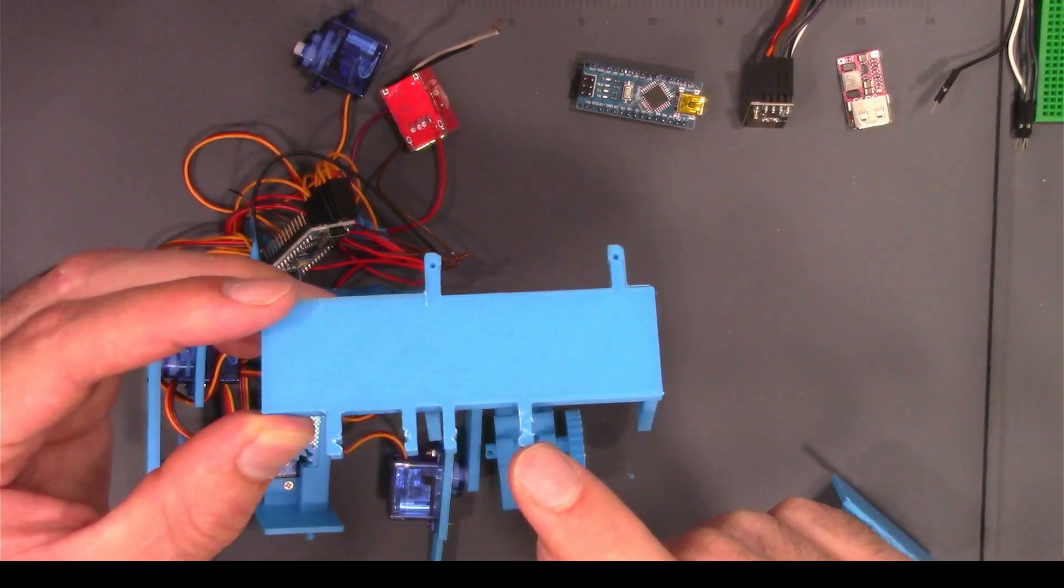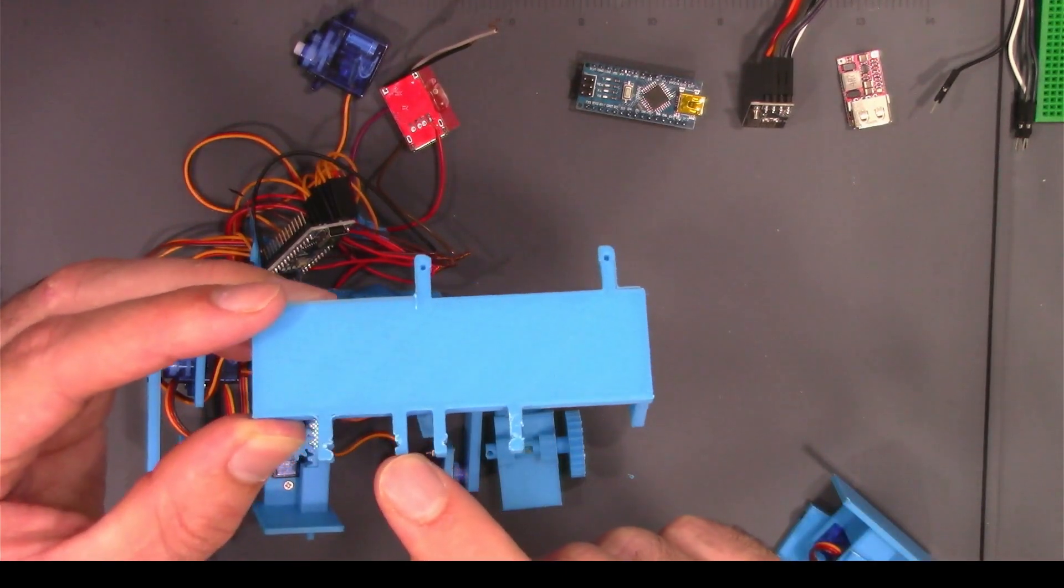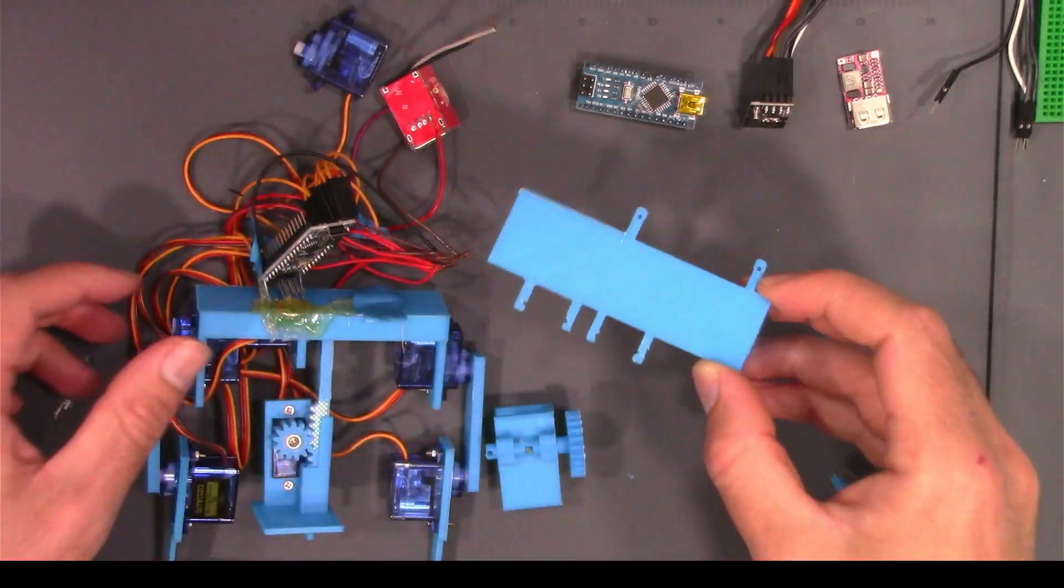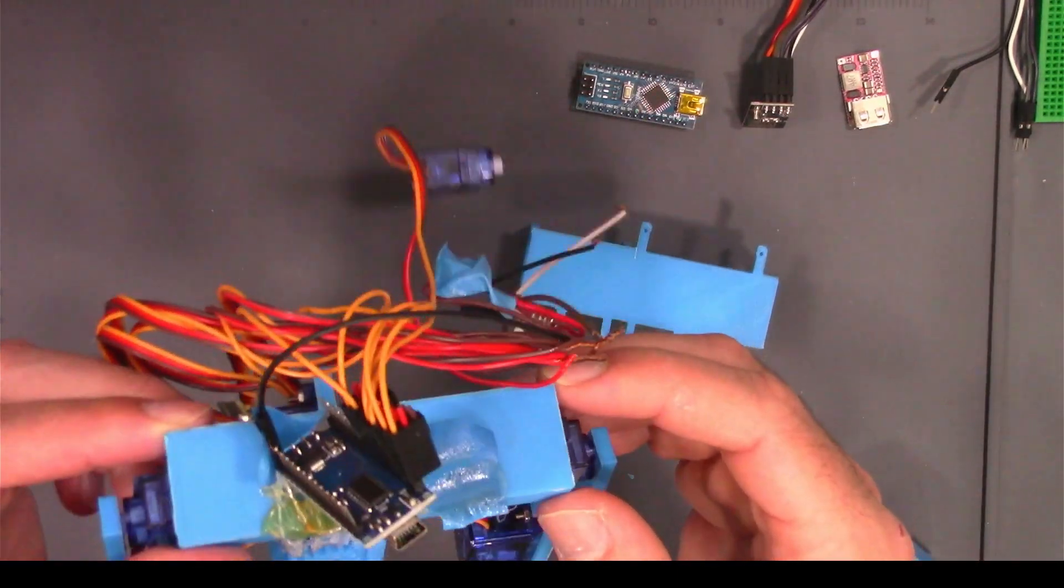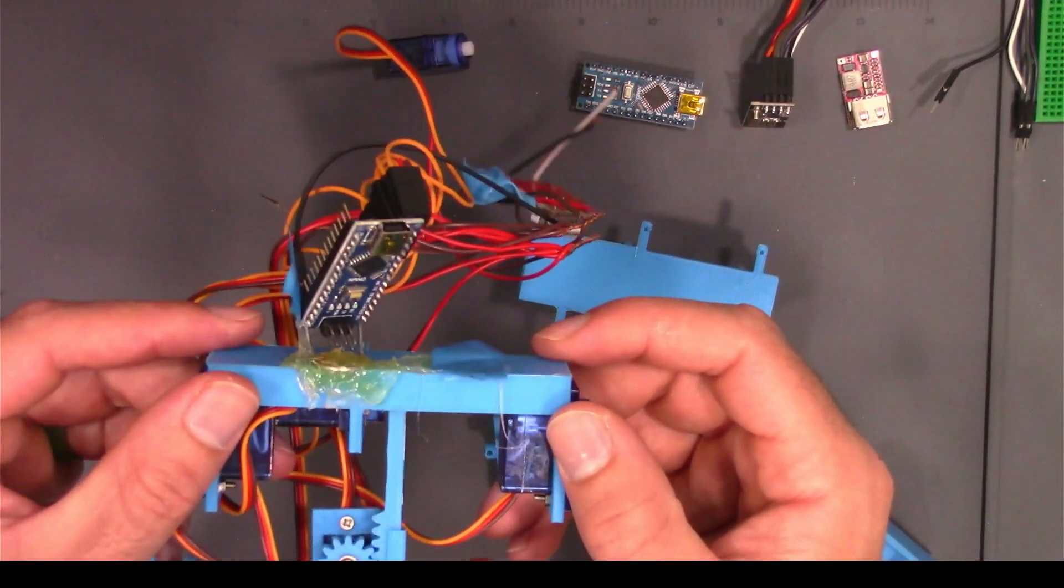There's a slot for a transceiver, the buck converter for the power supply, and a spot for the Arduino Nano. This way we can at least try and start to manage the wires and prevent it from being too top heavy.